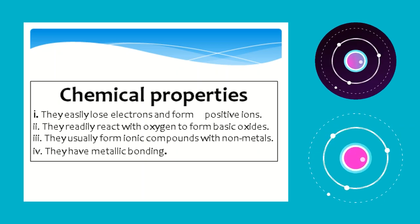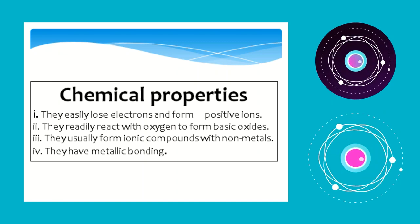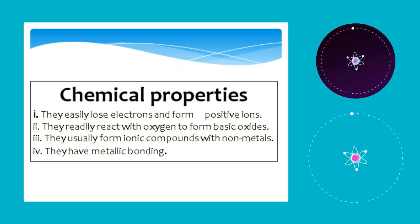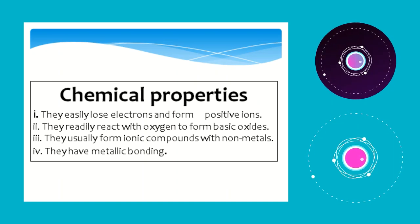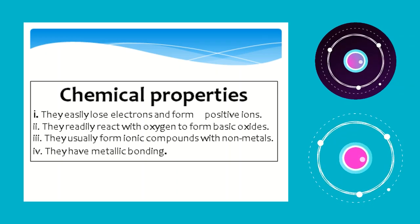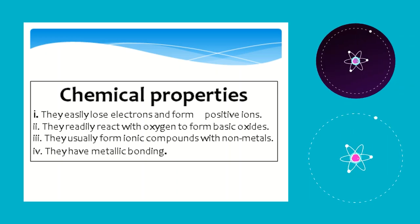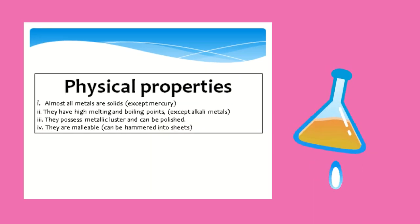Chemical properties of metals: They easily lose electrons and form positive ions. They readily react with oxygen to form basic oxides. They usually form ionic compounds with non-metals. They have metallic bonding.